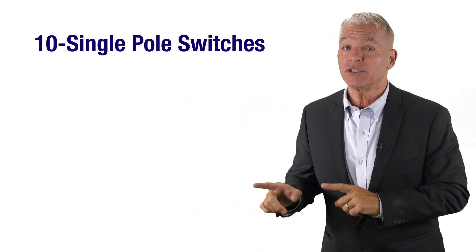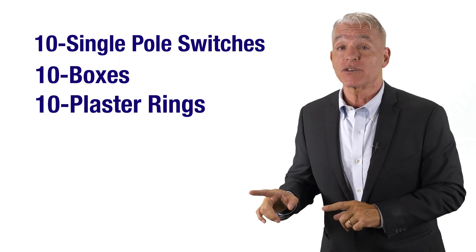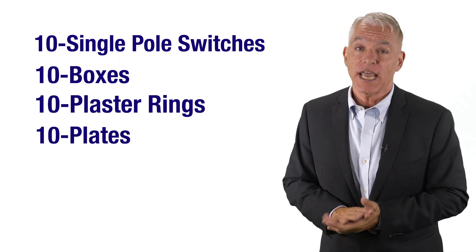We're just going to add one more item to finish the review of software package number one. Now we're going to add 10 single pole switches with 10 boxes, 10 plaster rings, 10 plates. We're also going to add 10 feet of EMT Raceway to each switch to get above the ceiling. Now the steps to accomplish this is going to be as follows.